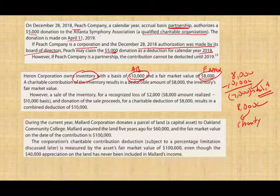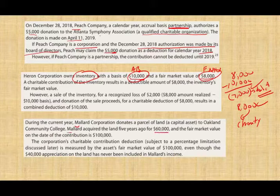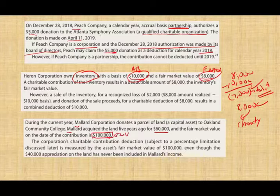Example three: During the current year, M Corporation donated a parcel of land — a capital asset — to Oakland Community College. M Corporation acquired the land five years ago for $60,000, and the fair market value is $100,000. Because it's long-term property, M Corporation is allowed to use the fair market value of $100,000 as the deduction amount, assuming there is no limitation.